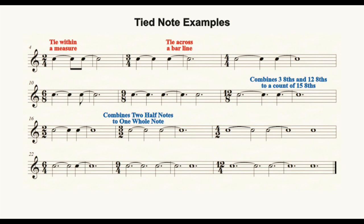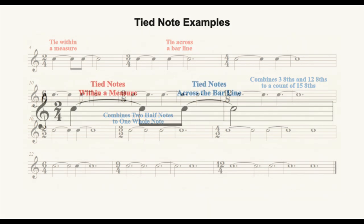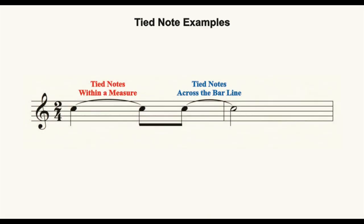Or, as in the third staff, second measure, in 3/2 time to combine two half-notes into a single whole note. Additionally, notes can be tied within a measure or across a bar line. Ties within a measure are usually made to make clear to the performer exactly where the beats occur.